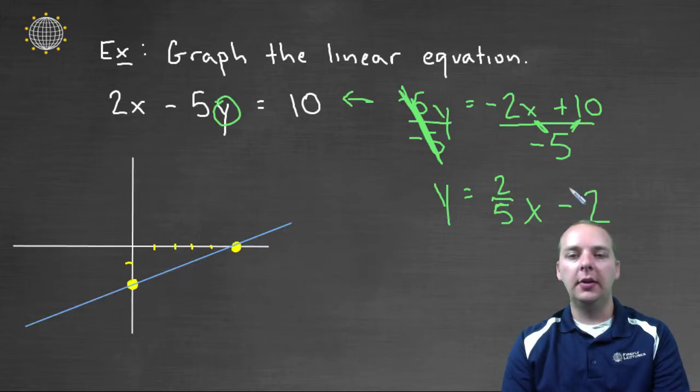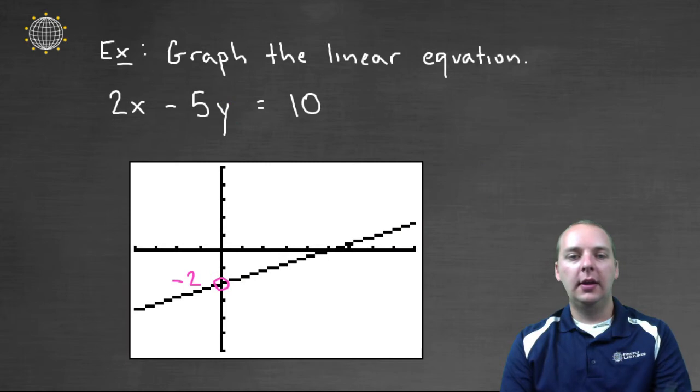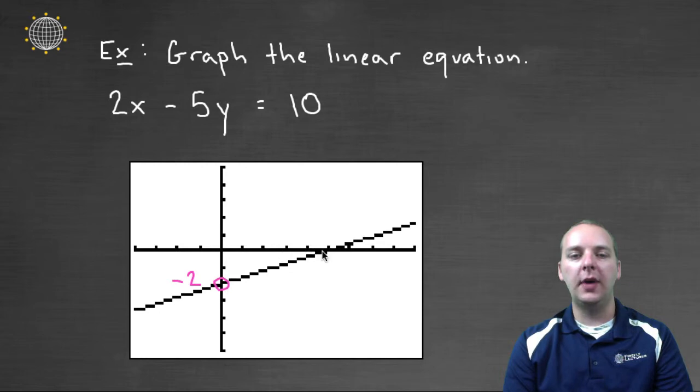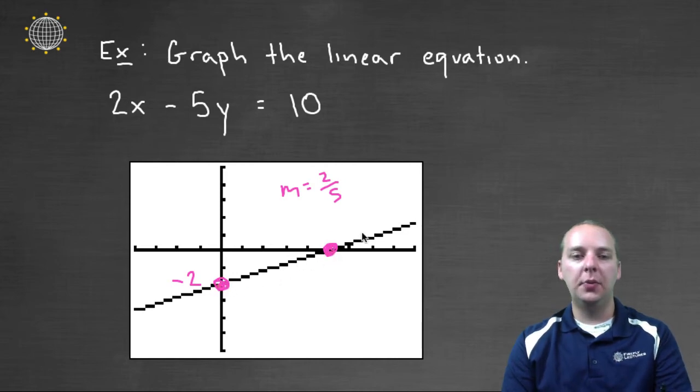If you look back here, the y-intercept was negative two, and the slope was two-fifths. And so from this y-intercept, you could go up one, two, and to the right one, two, three, four, five. And so with a slope of two-fifths, you would get an additional point on the line. And when we connect those dots, we get the graph of the line.